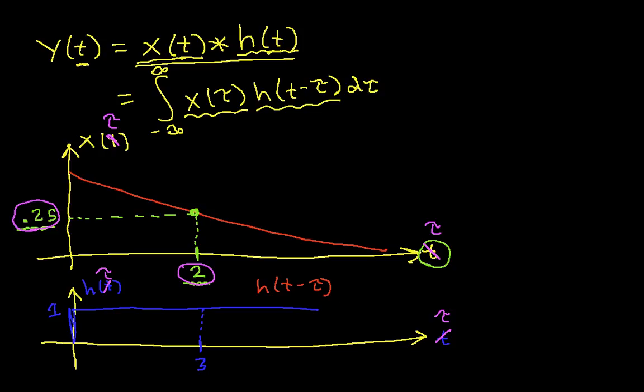So how do we interpret that? Well, let's try to graph it. Again, we'll think of this as a function of tau, h of t minus tau. When we go back to our definition of y, we want to compute the output for a specific value of t. And that specific value of t is what shows up here. So suppose we want to find h of t minus tau when t is equal to 2, just as an example.